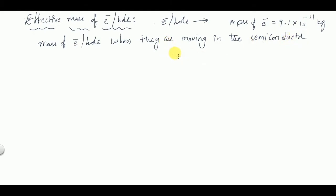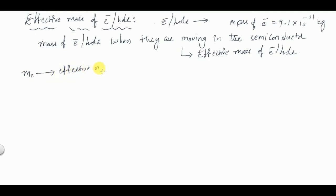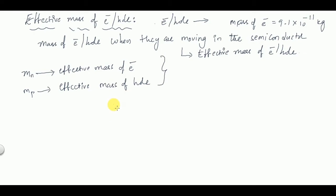When the charged particles are in motion, the corresponding mass of electron or hole is called the effective mass of electron or hole. If mn represents the effective mass of electron and mp represents the effective mass of hole, then these values are always expressed in terms of m, that is the rest mass of electron, where m = 9.1 × 10⁻³¹ kg.